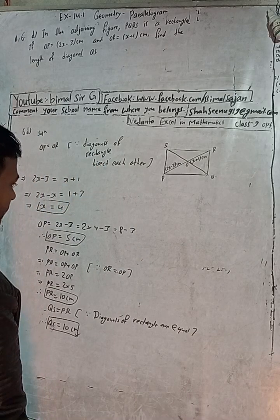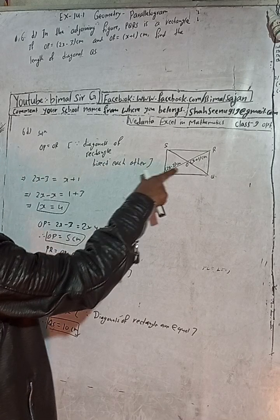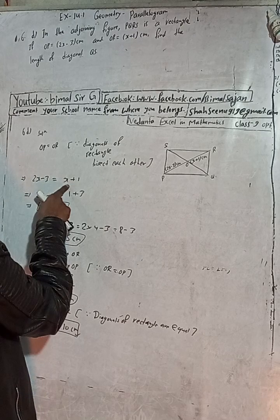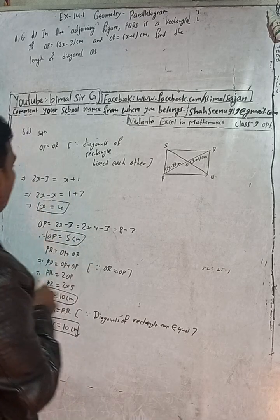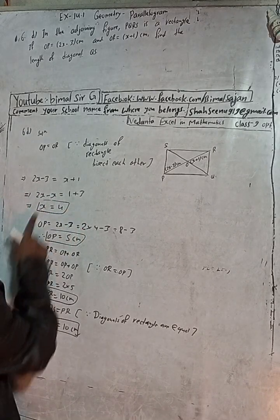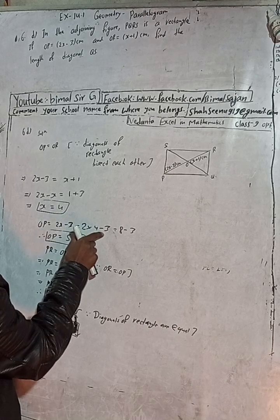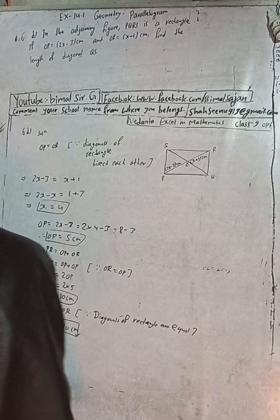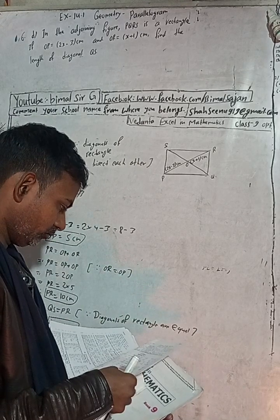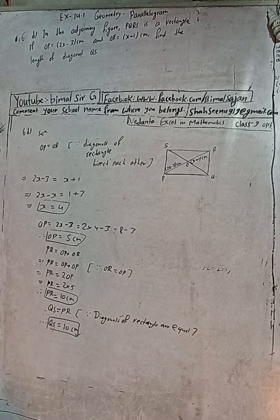Wait, let me check — here 2x minus 3 equals x plus 1, so 2x minus x equals 1 plus 3, x equals 4. That means OP equals 2 times 4 minus 3, which is 8 minus 3 equals 5 cm. So the answer should be 10 cm, but the book shows 8 cm — if you find a different answer in your book, please comment.